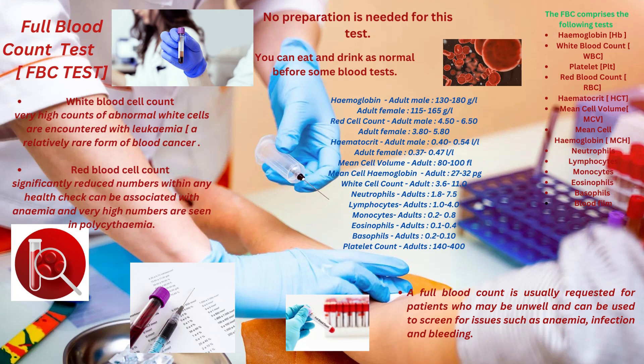The FBC also includes mean cell volume, neutrophil, lymphocyte, monocyte, eosinophils, basophils, and blood film. White blood cell count — very high counts of abnormal white cells are encountered with leukemia. Red blood cell count — significantly reduced numbers can be associated with anemia, and very high numbers are seen in polycythemia.